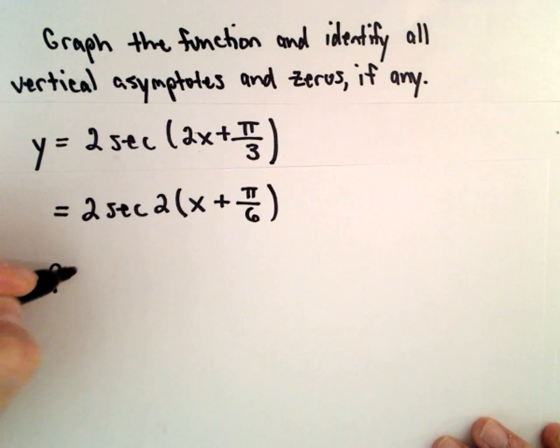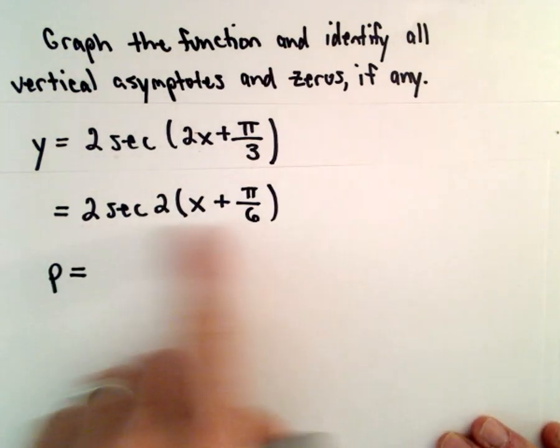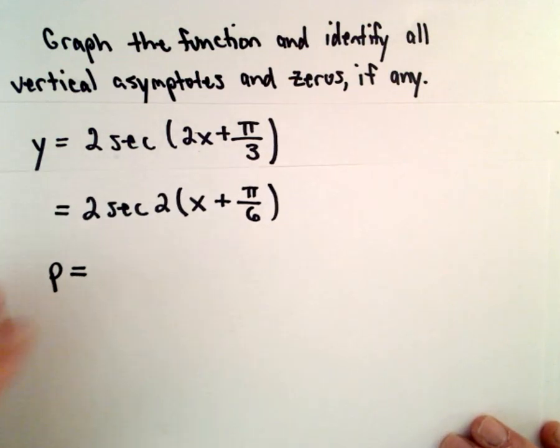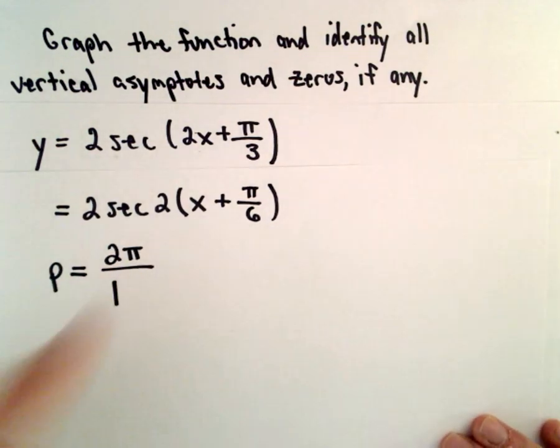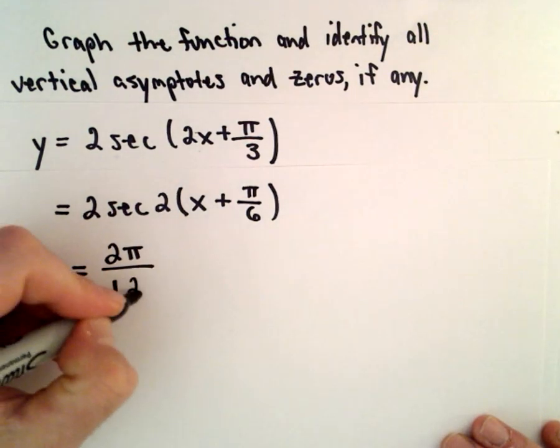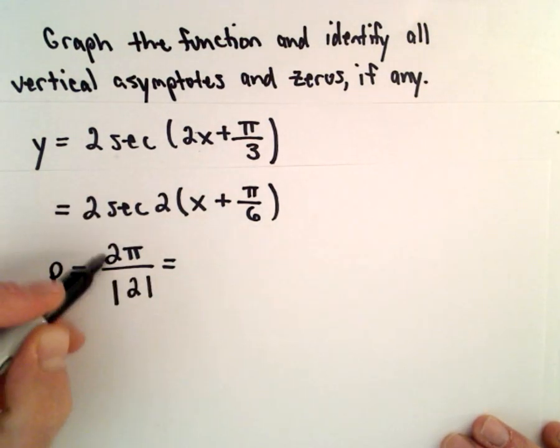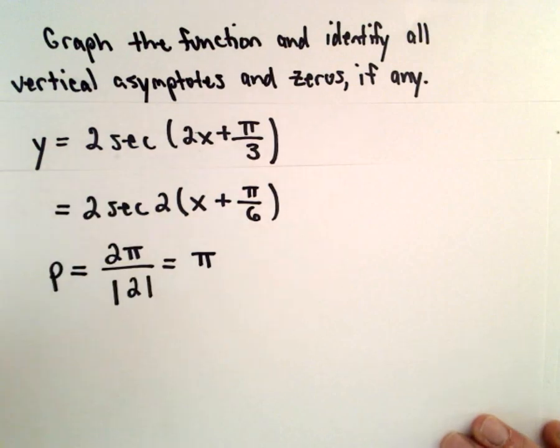The reason why I want to do that is I want to determine the period of my function that I'm going to graph. So the period for secant is 2 pi, and we divide it by the absolute value of b, which in this case is 2. So 2 pi over 2 is simply going to give us pi.